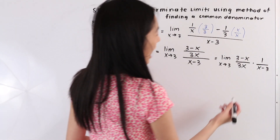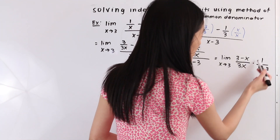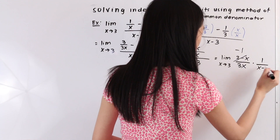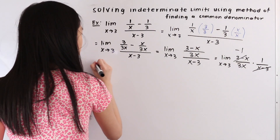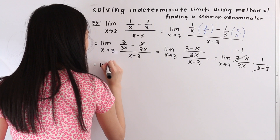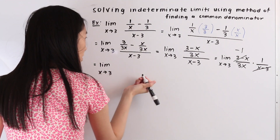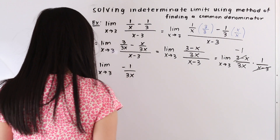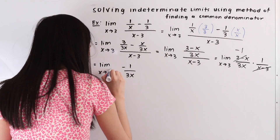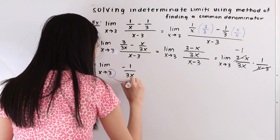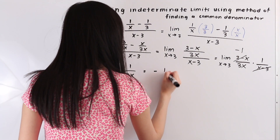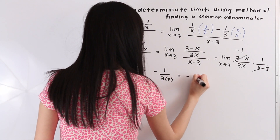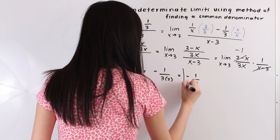We can see here that if we factor out a negative 1 on this term, it will cancel out with the x minus 3 term. So we have the limit as x approaches 3 of negative 1 over 3x. From here we can go ahead and plug in this value for a in for x. When we do that, we get negative 1 over 3 times 3, and so this is equal to negative 1 over 9. And this is our final answer.